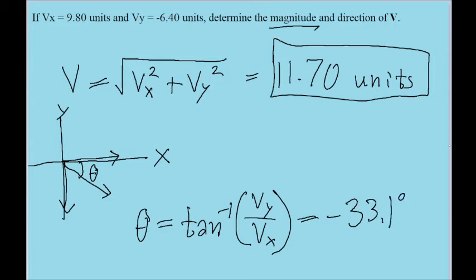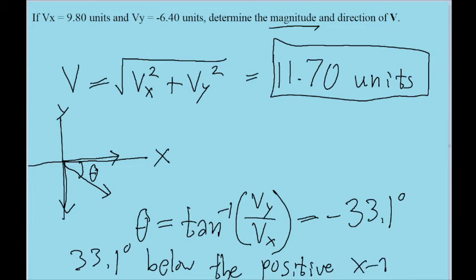So how would we describe the direction of the vector then? Well like I said, typically we do this relative to the positive x axis. So the way I'm going to write this, in this case, is 33.1 degrees, I'll specify below the positive x axis. And that's how I will write it, in this case. That's how I'll clarify the direction.